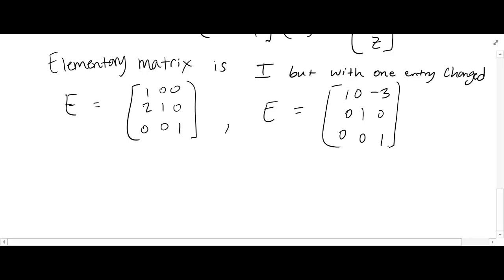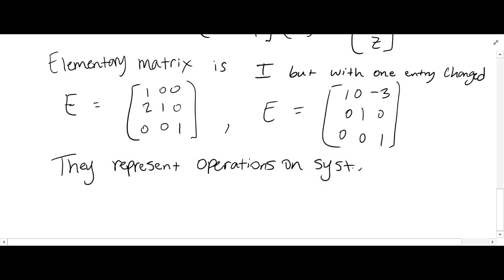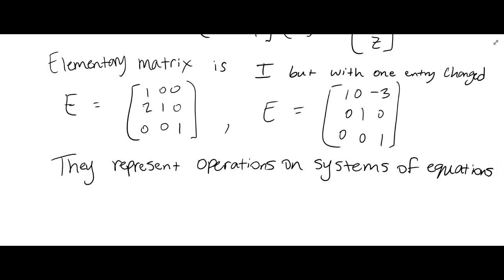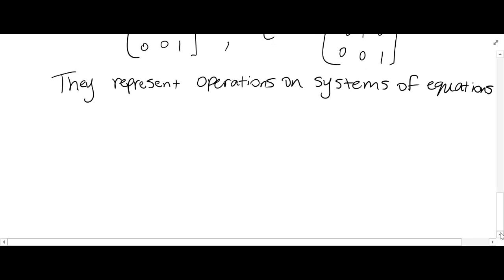The important thing about elementary matrices is that they represent operations on systems of linear equations. When solving a system, we do things like equation 2 minus equation 1, or equation 3 minus 2 times equation 1. Those operations can be represented using elementary matrices, which is why they're useful — we can use them to reduce systems of equations.